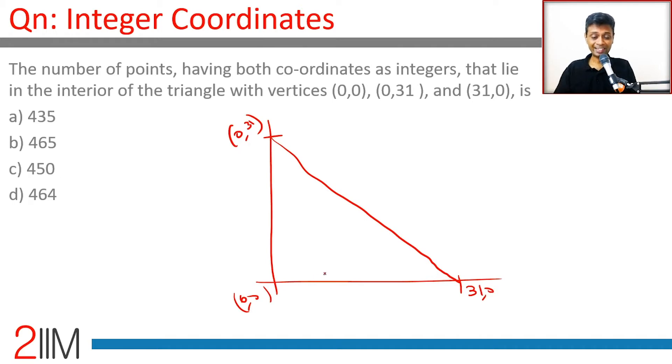You want to find all points in the interior. This is a straight line, an isosceles triangle. The straight line is x plus y equals 31.